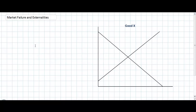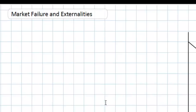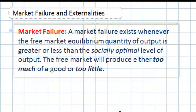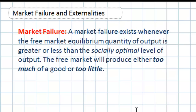Market failure is the examination of a particular instance in which the free market — in other words when private consumers and private sellers interact with one another — and the equilibrium level of output actually reduces the overall welfare or efficiency in society. A market failure exists whenever the free market equilibrium quantity of output in a market is greater or less than the socially optimal quantity of output. In other words, if a market left to its own devices produces either too much or too little of a good, we say that that market has failed to achieve the socially optimal level of output.